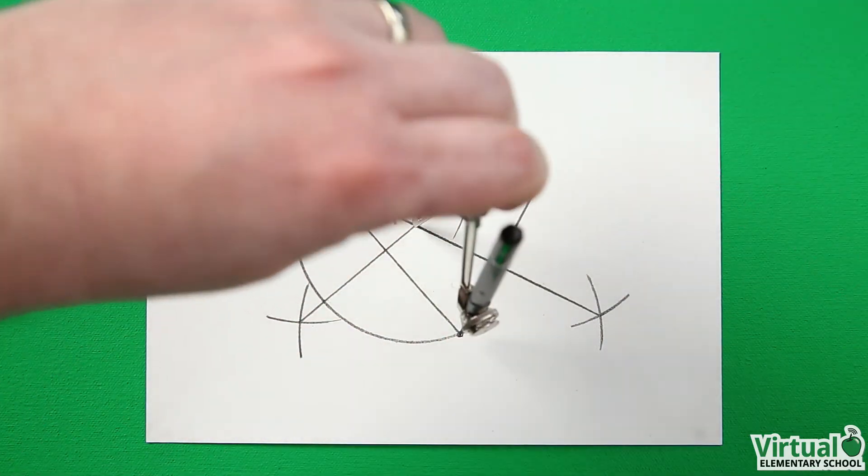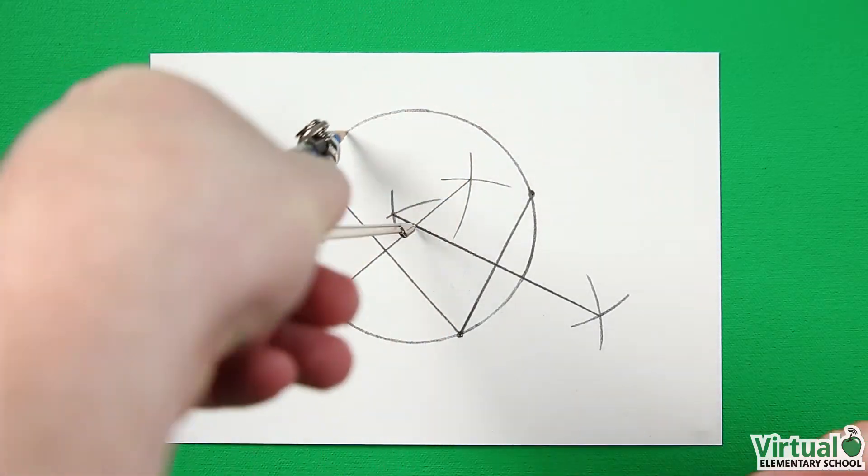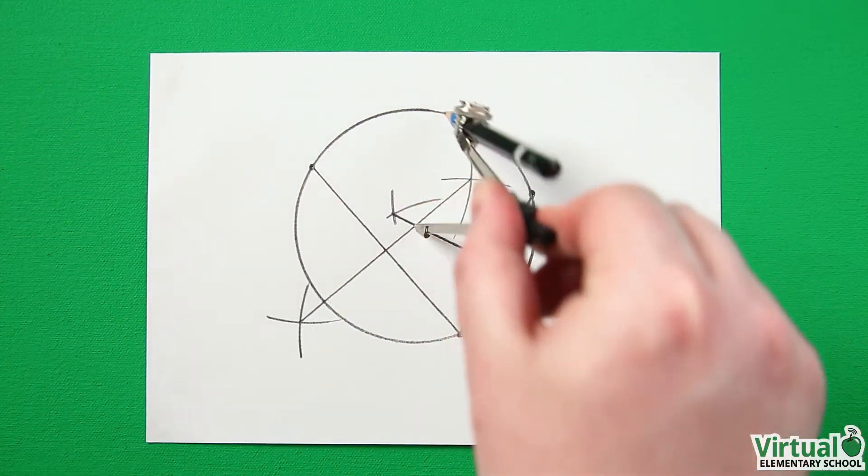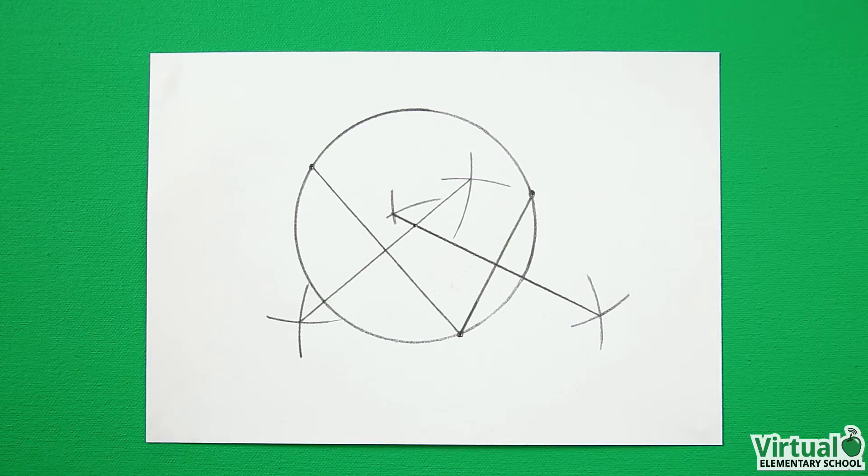Each of the three original points should become part of the circle. The circle is complete. Now, you can use a compass, a pencil, and a ruler to draw a circle when given three points.